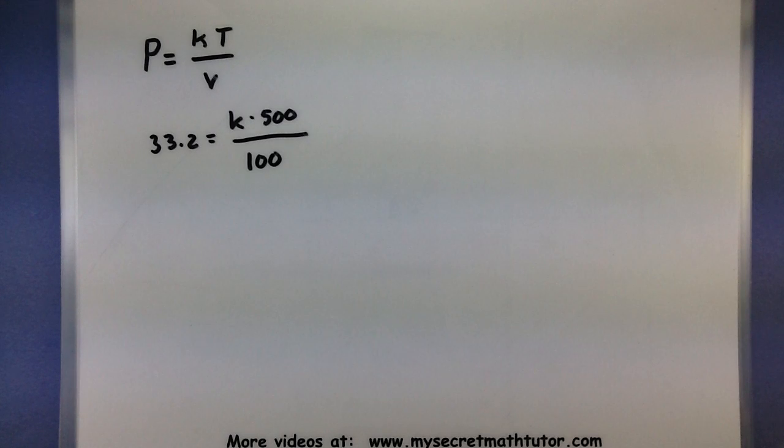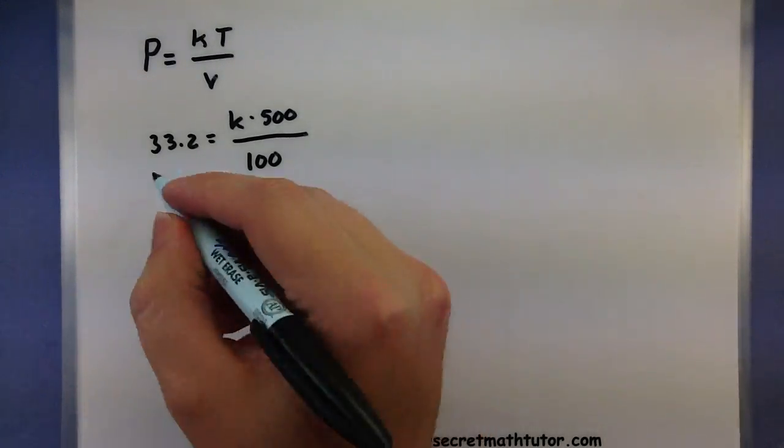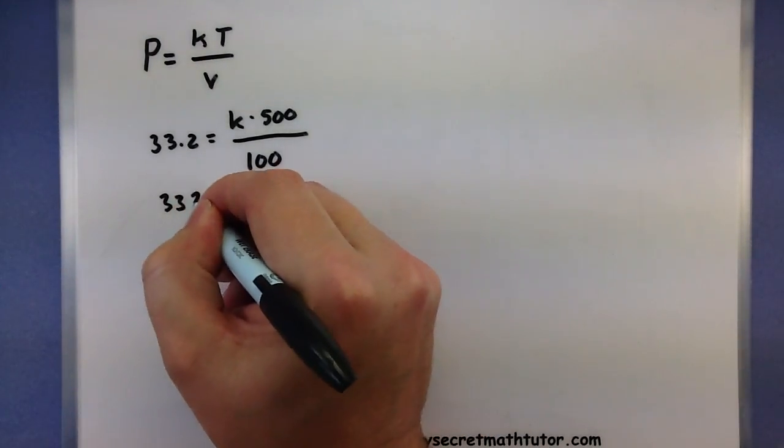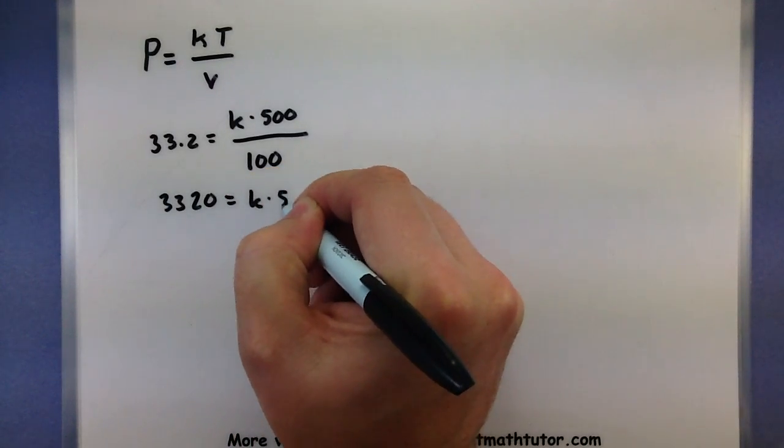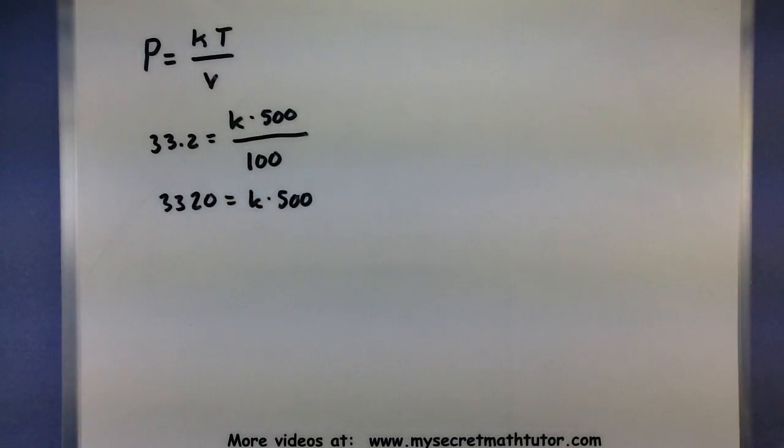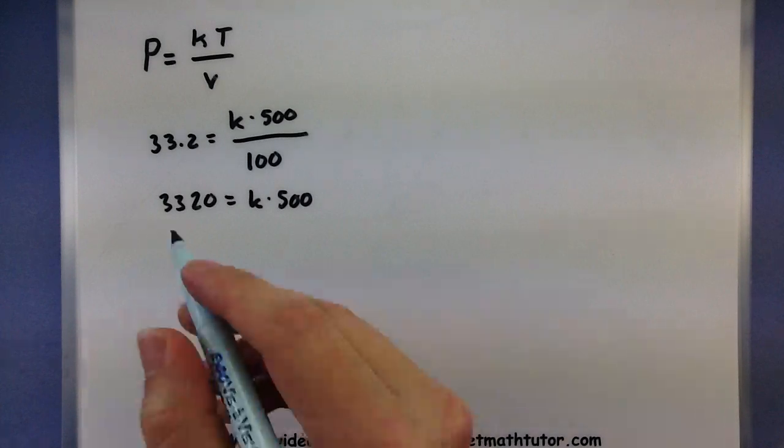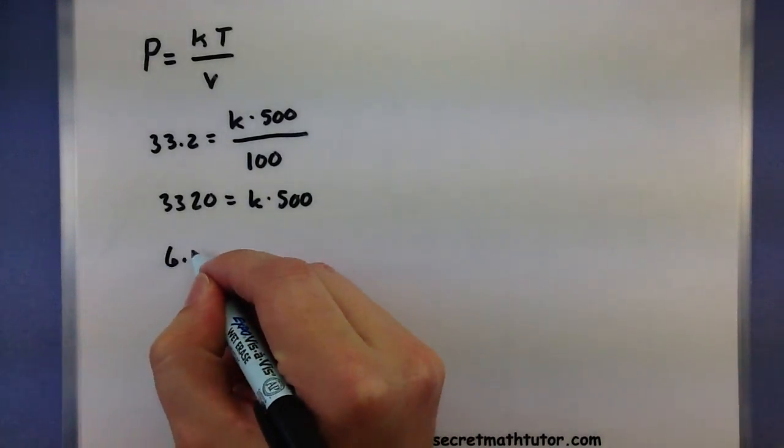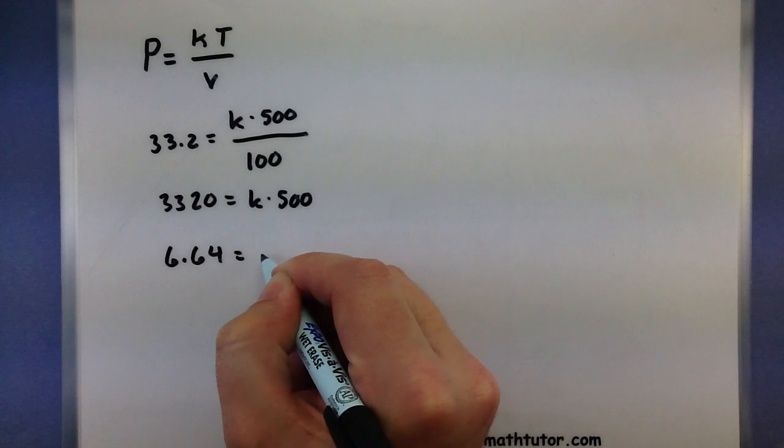To solve this, I'd begin by multiplying both sides by 100. Then I'd divide both sides here by 500. So this would give me 6.64 is equal to k.